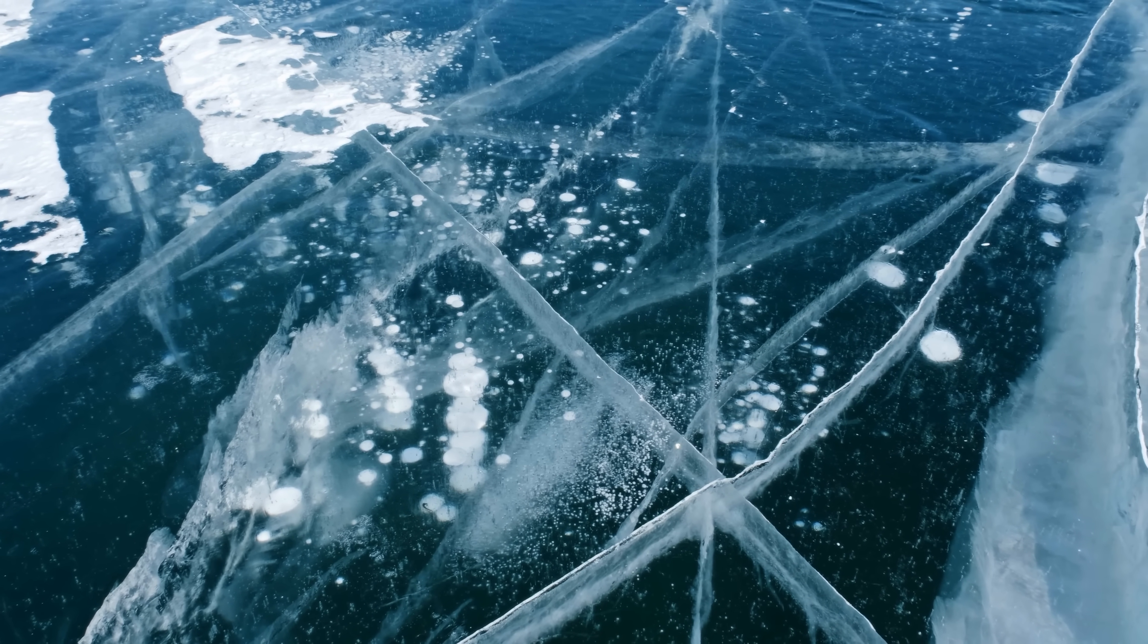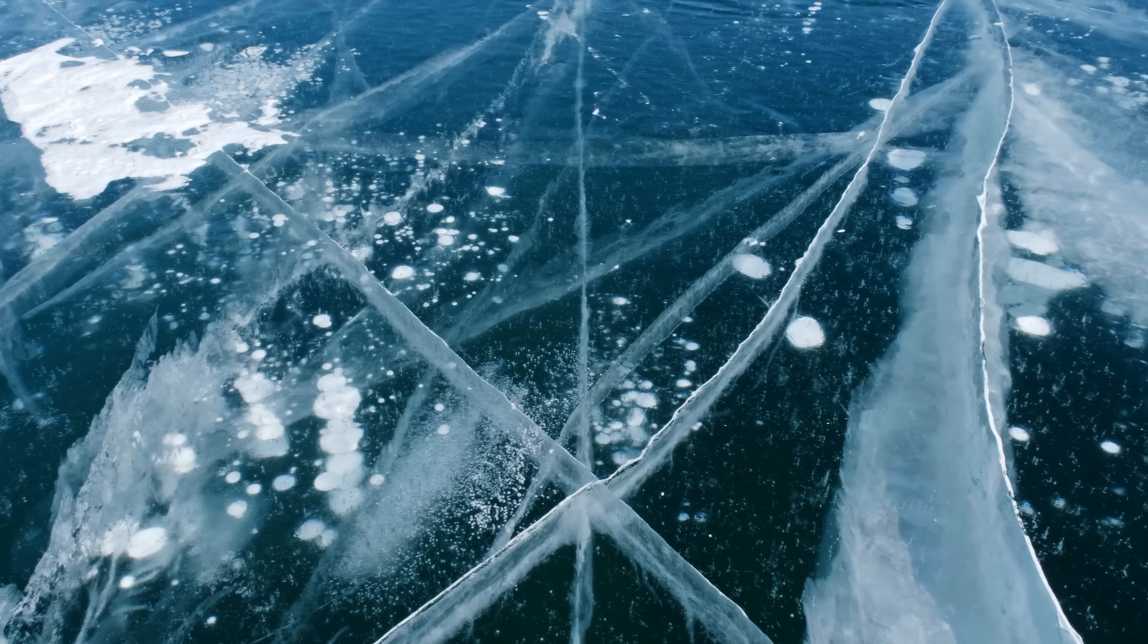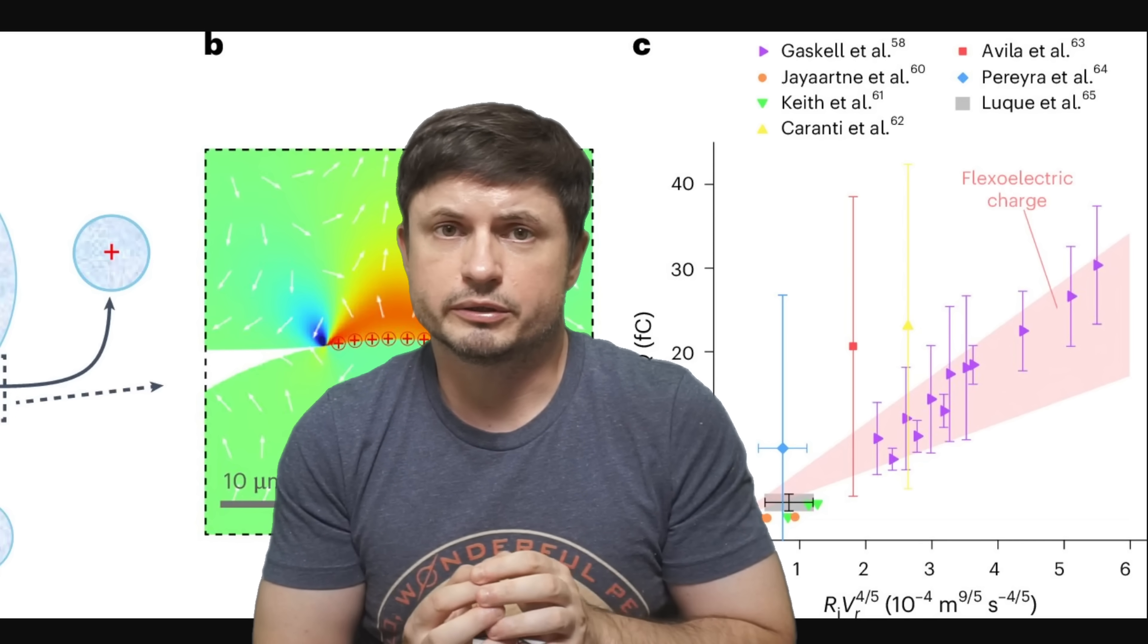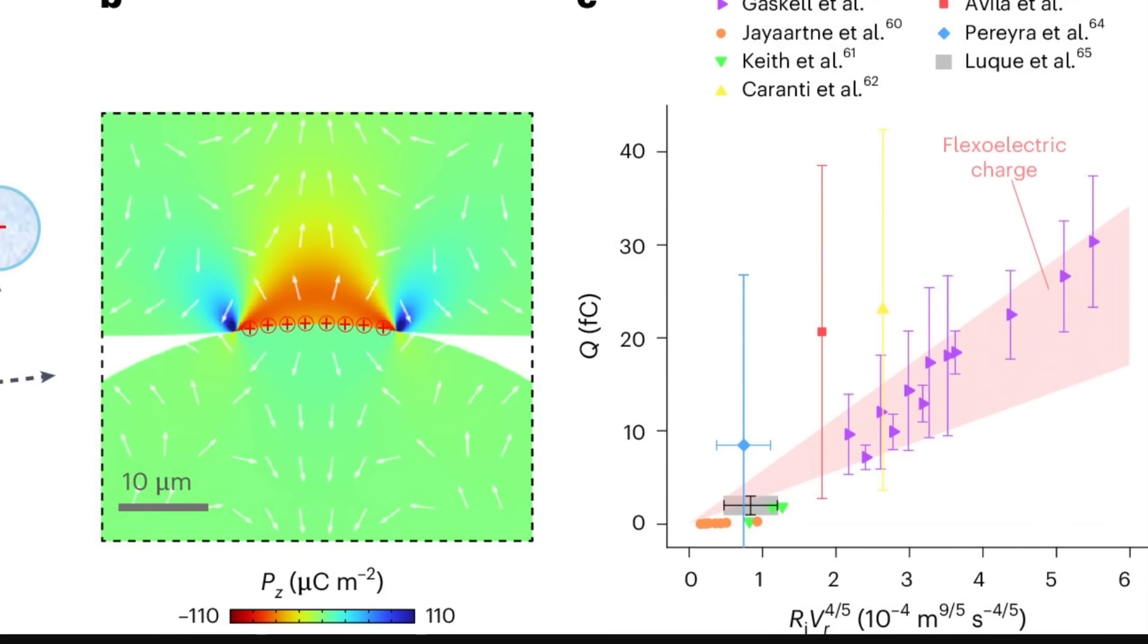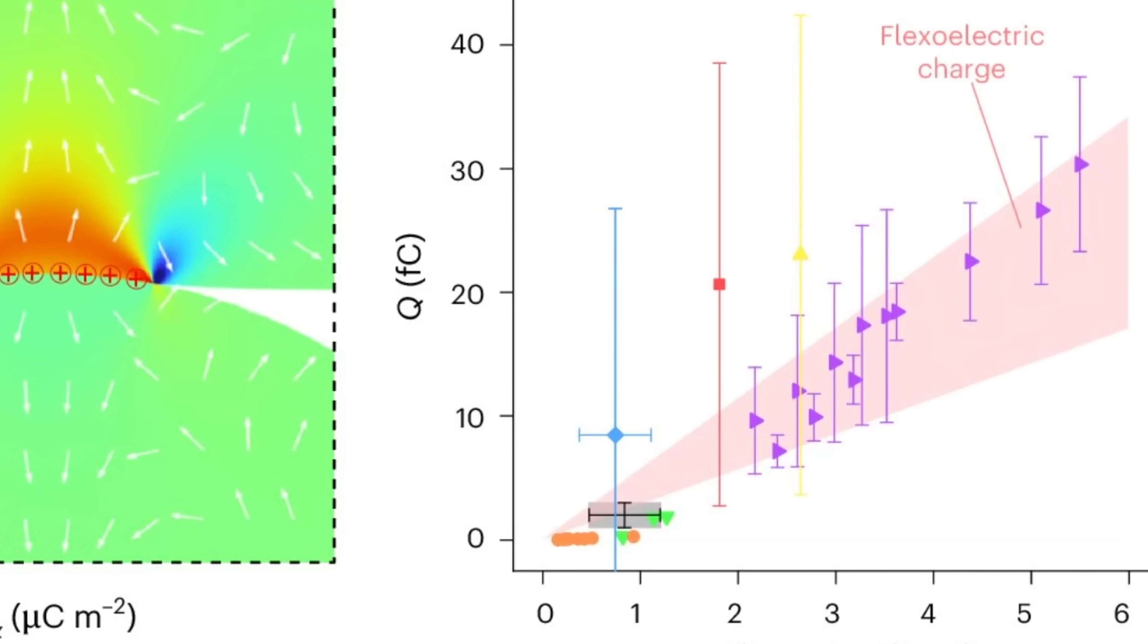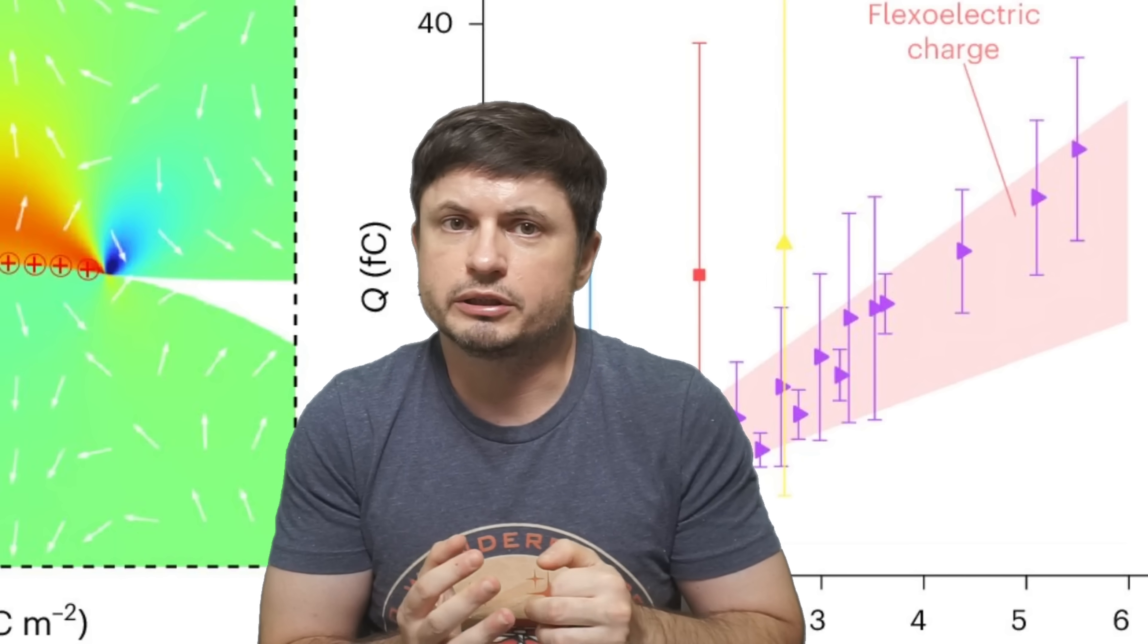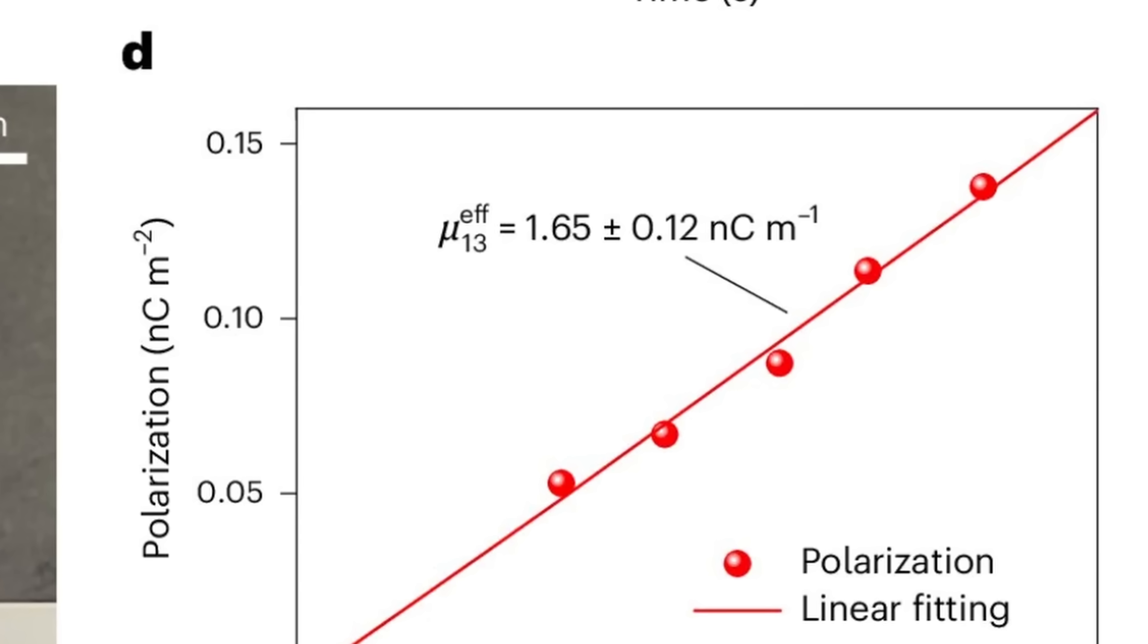Ice is indeed flexoelectric with the coefficient of 1.14 nC per meter. And just to give you a bit more perspective, this is actually comparable to some of the more advanced ceramic materials, like for example strontium titanate, or even titanium dioxide, which are actually used in a lot of different technologies for this exact purpose. And so this is not some kind of a minuscule theoretical effect, this is a robust measurable property that potentially has a lot of application.